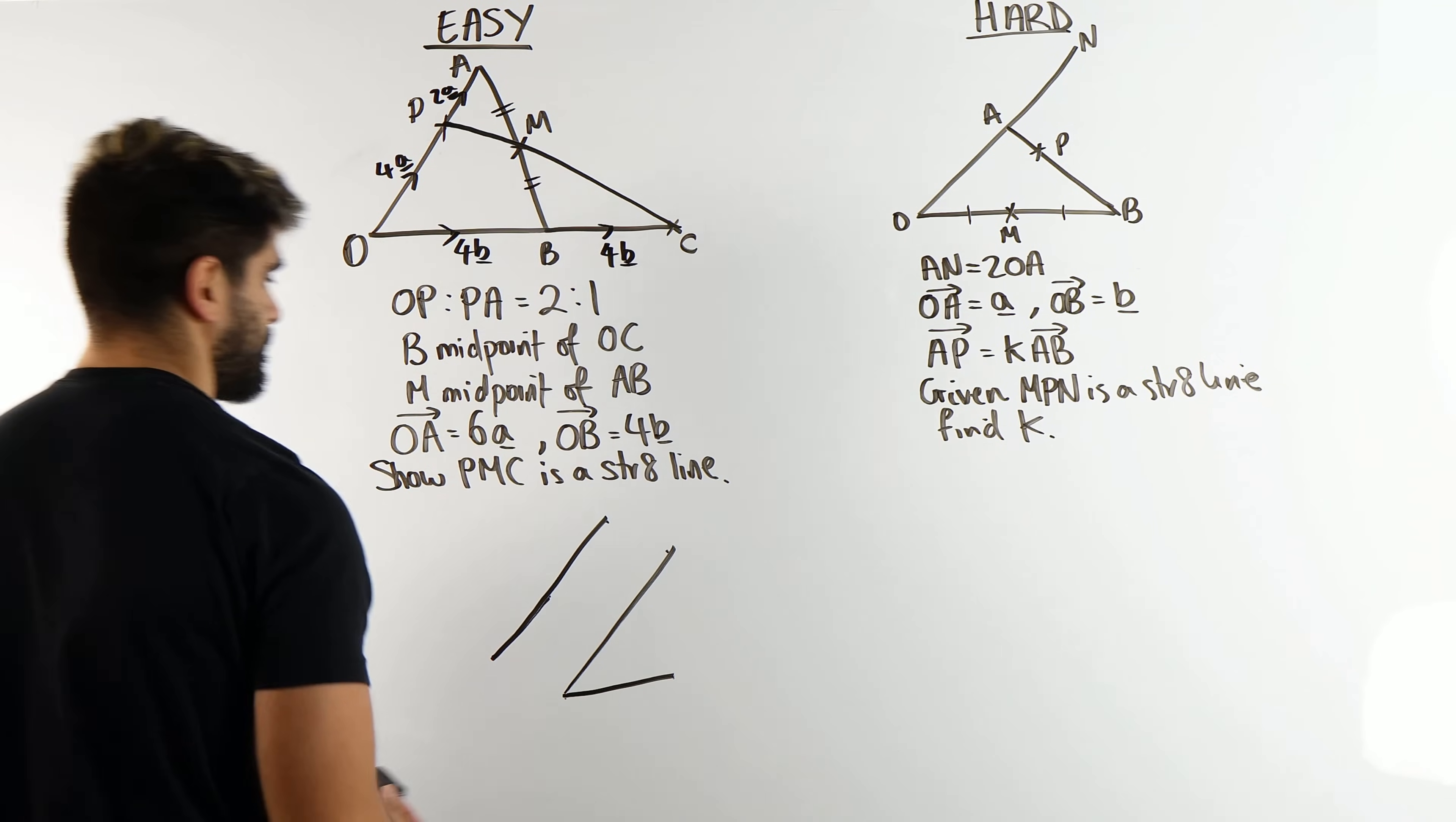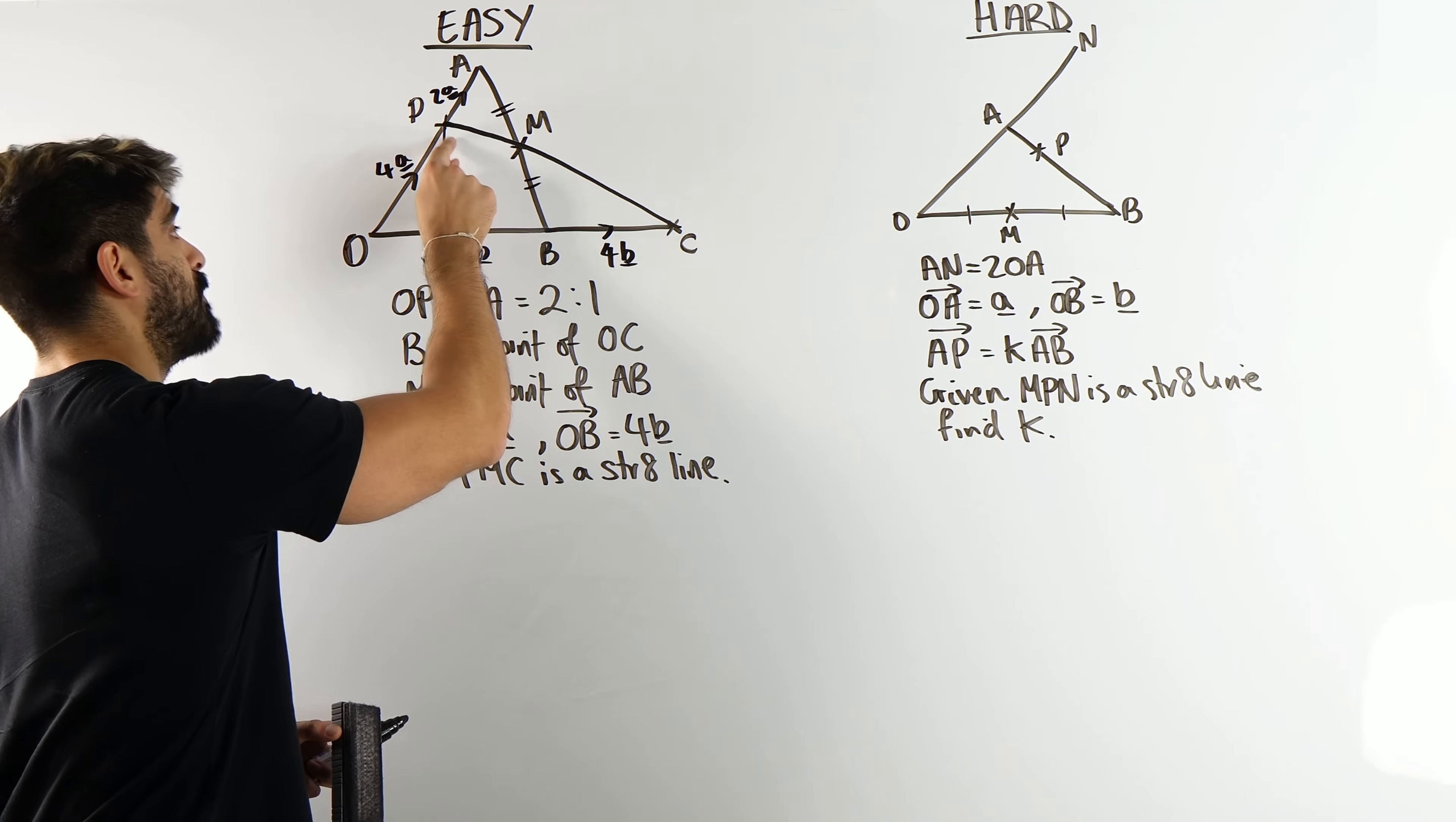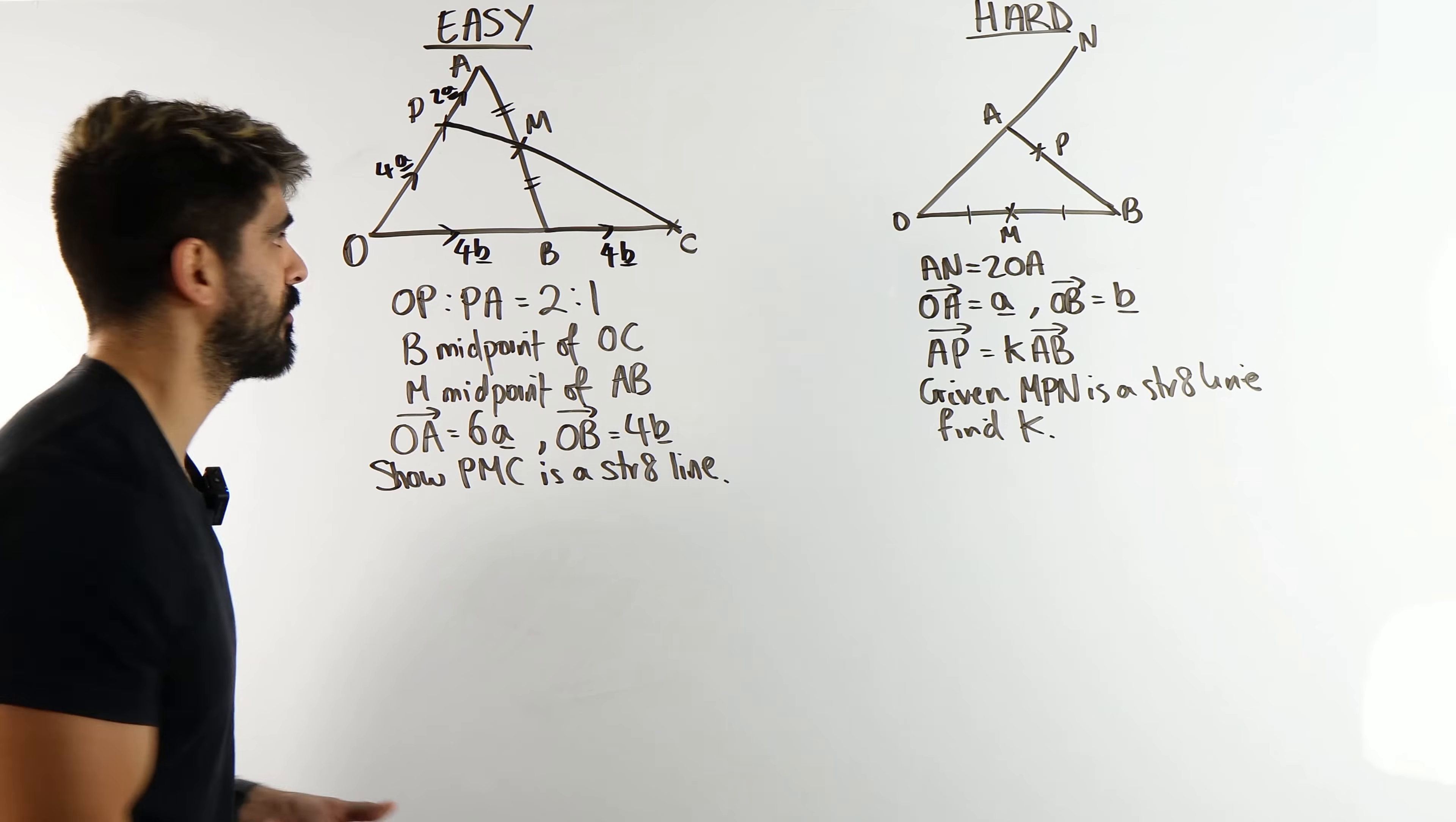So we take an endpoint, we work out P to M, wherever that vector is. Then we'll do P to C and prove that they are parallel. Because if they are parallel, it means these lines overlap each other. Some students, because they're taught this way, they do P, M, M, C. I don't like that because P to C is a very easy vector to work out. Pick the endpoints. Make your life simpler.